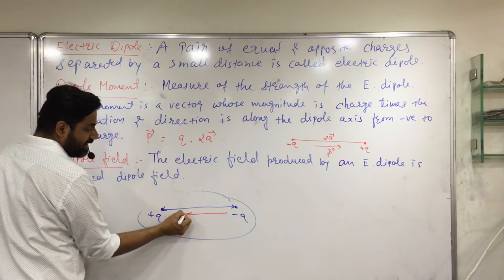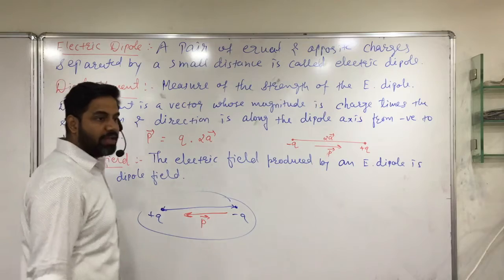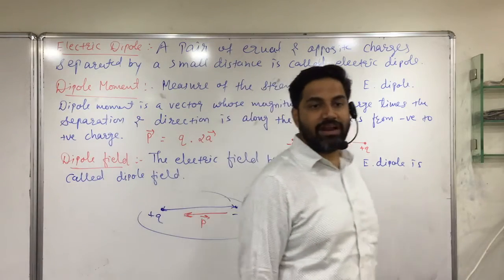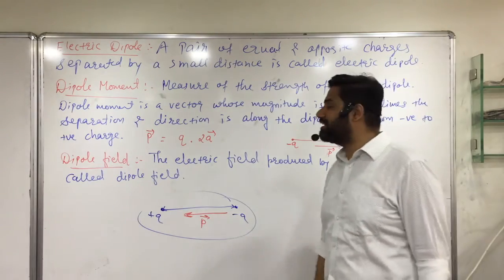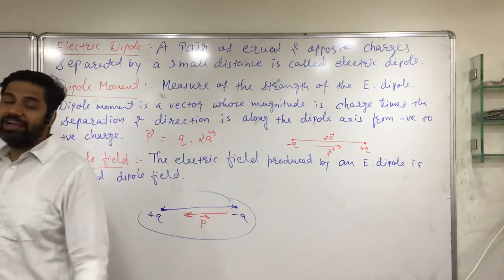Direction is along the dipole axis from negative to positive charge. This direction is along that direction. This is what I call P bar. Always from negative to positive charge.